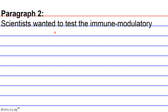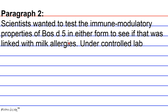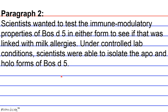Paragraph 2. Scientists wanted to test the immune modulatory properties of BOS D5 in either form to see if that was linked with milk allergies. Under controlled lab conditions, scientists were able to isolate the apo and holo forms of BOS D5.